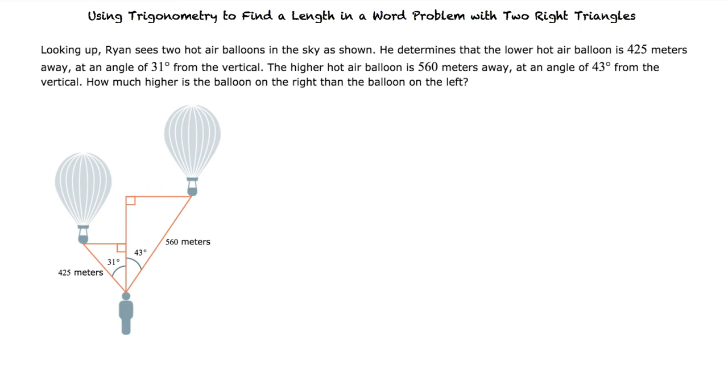Looking up, Ryan sees two hot air balloons in the sky as shown. He determines that the lower hot air balloon is 425 meters away at an angle of 31 degrees from the vertical. The higher hot air balloon is 560 meters away at an angle of 43 degrees from the vertical. How much higher is the balloon on the right than the balloon on the left?